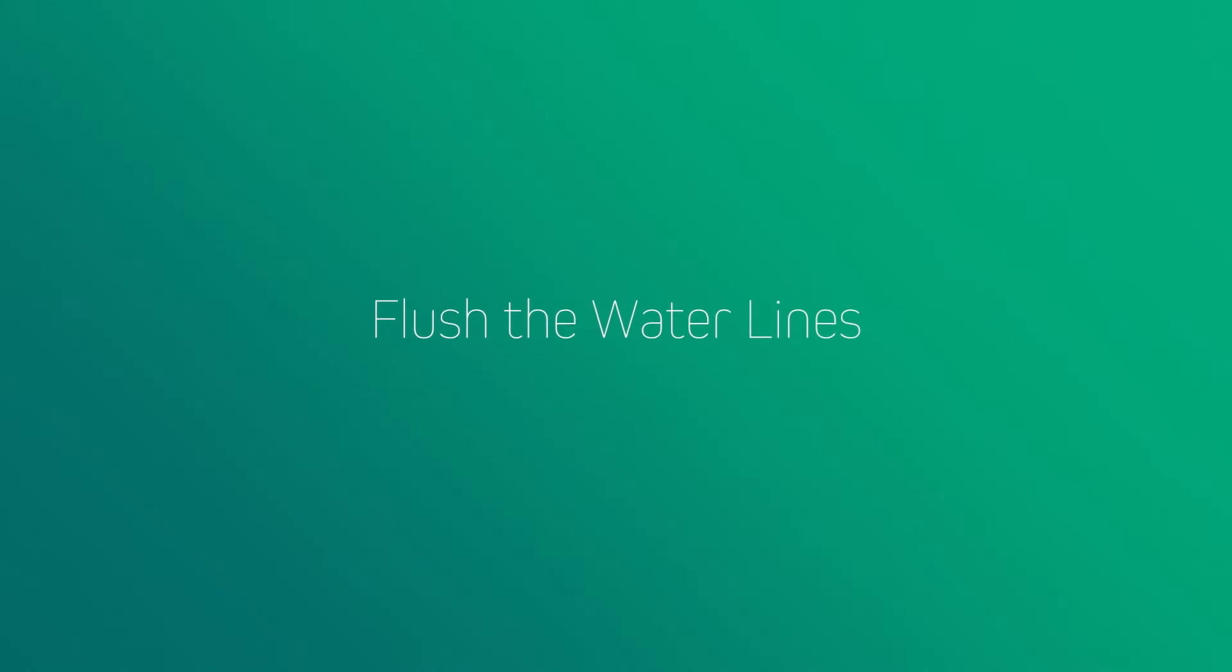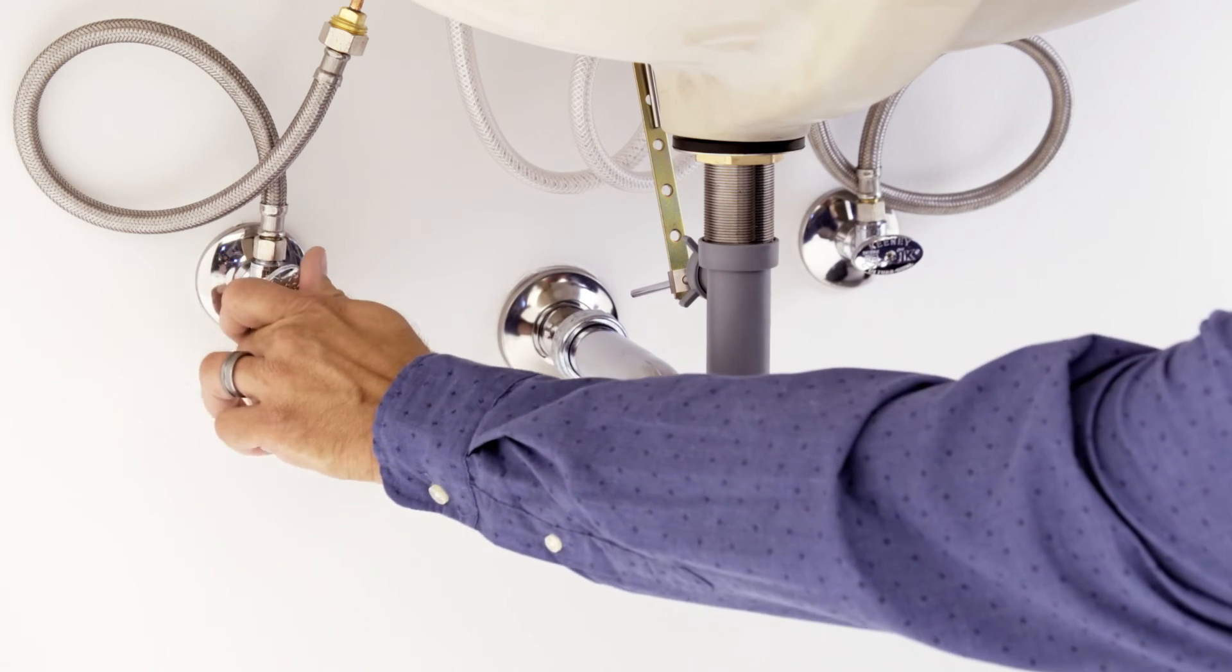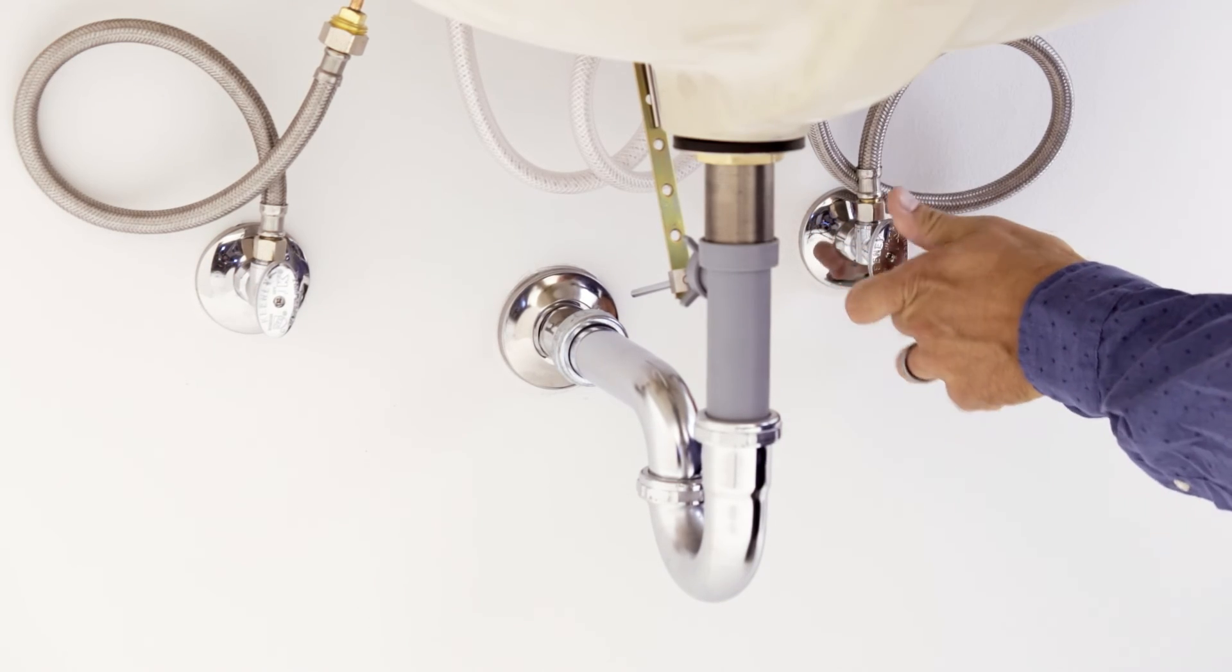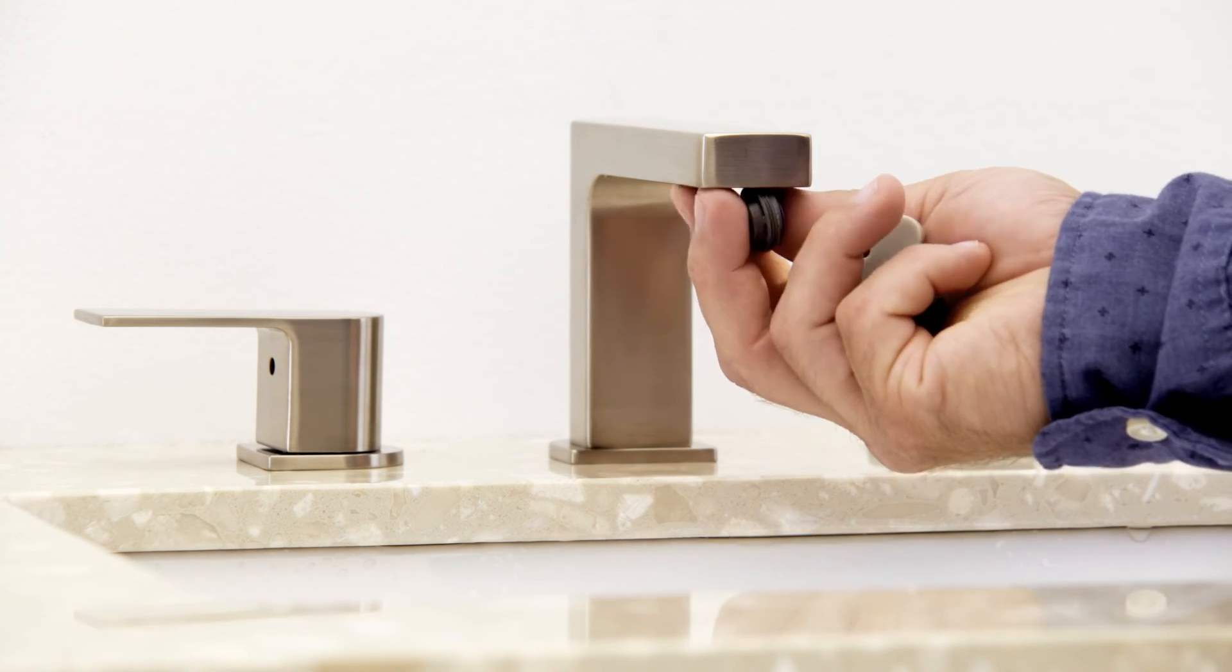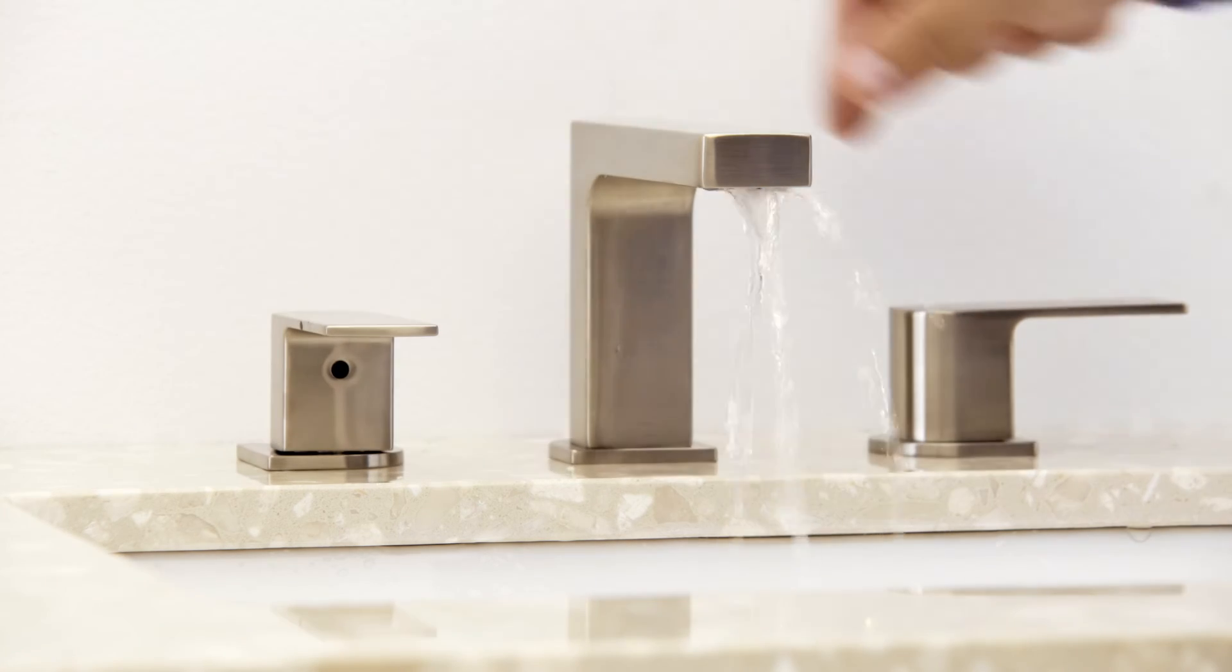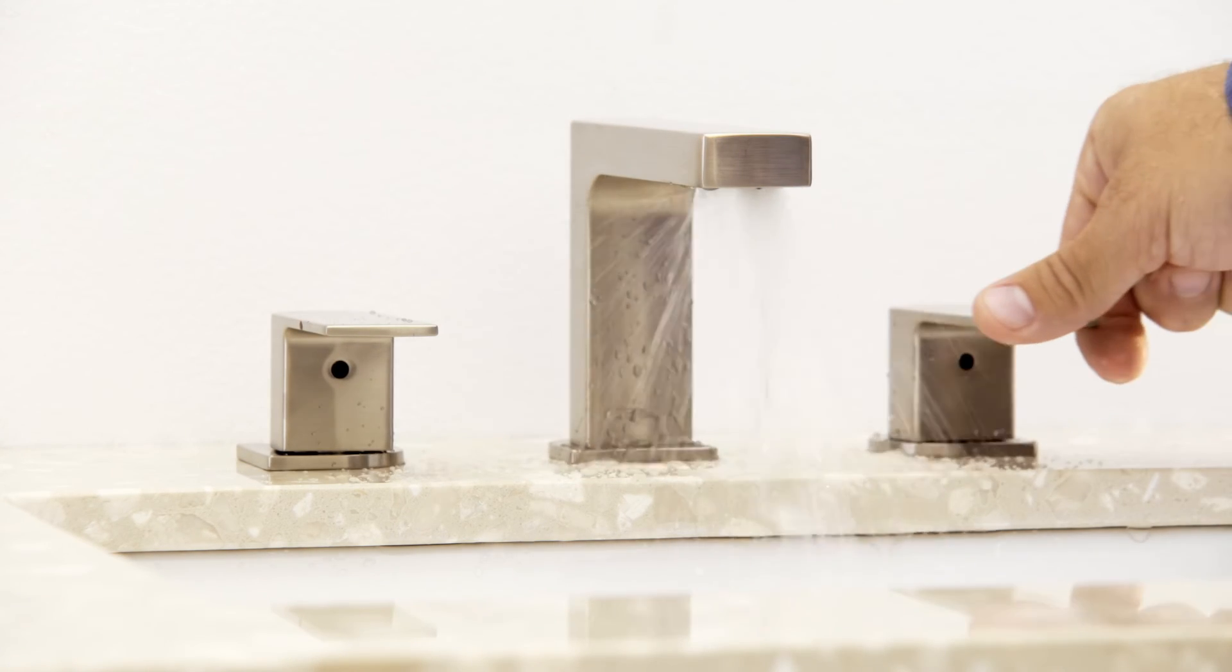Last, flush the water lines. Turn on the hot and cold supplies and remove the aerator from the faucet. Turn the faucet to the full open position and flush the lines for one minute.